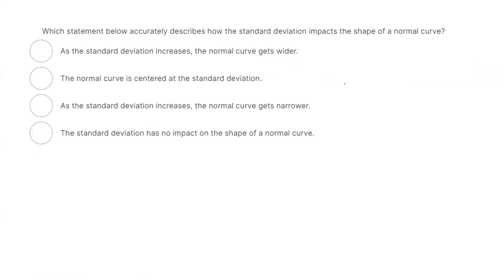Which statement below accurately describes how the standard deviation impacts the shape of a normal curve? The first one says: as the standard deviation or variability increases, the normal curve gets wider. This seems correct because as long as you have more variability, you expect the graph to distribute over the horizontal line — like salary or housing prices. You have variability there, so we expect the graph to be wide.